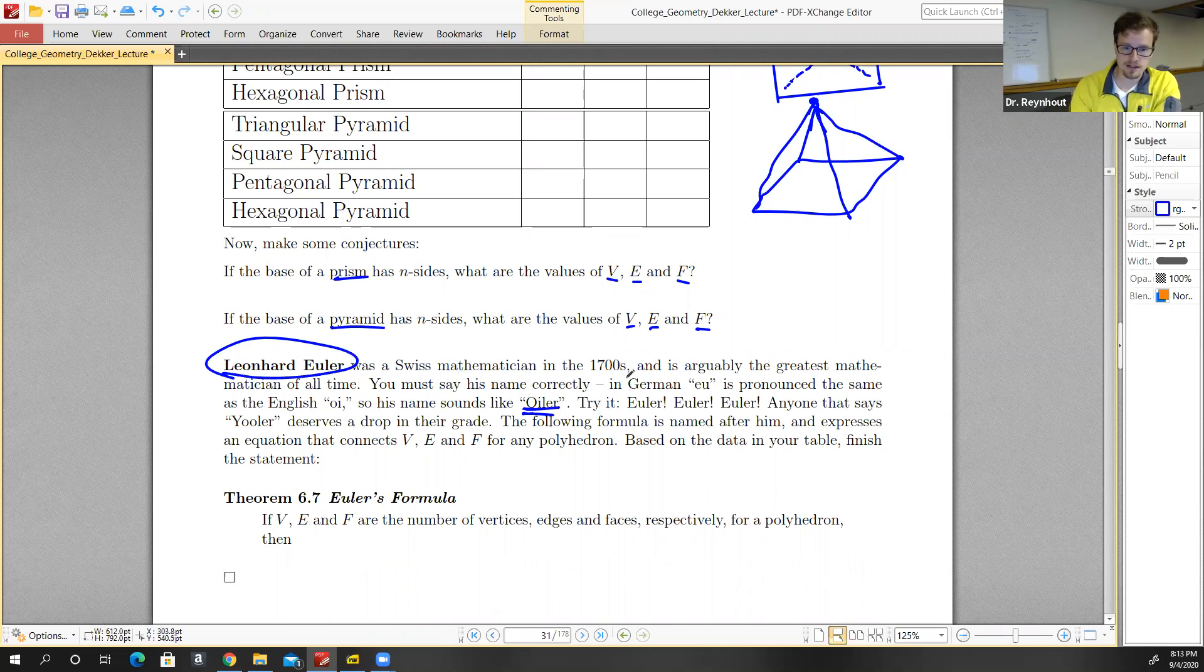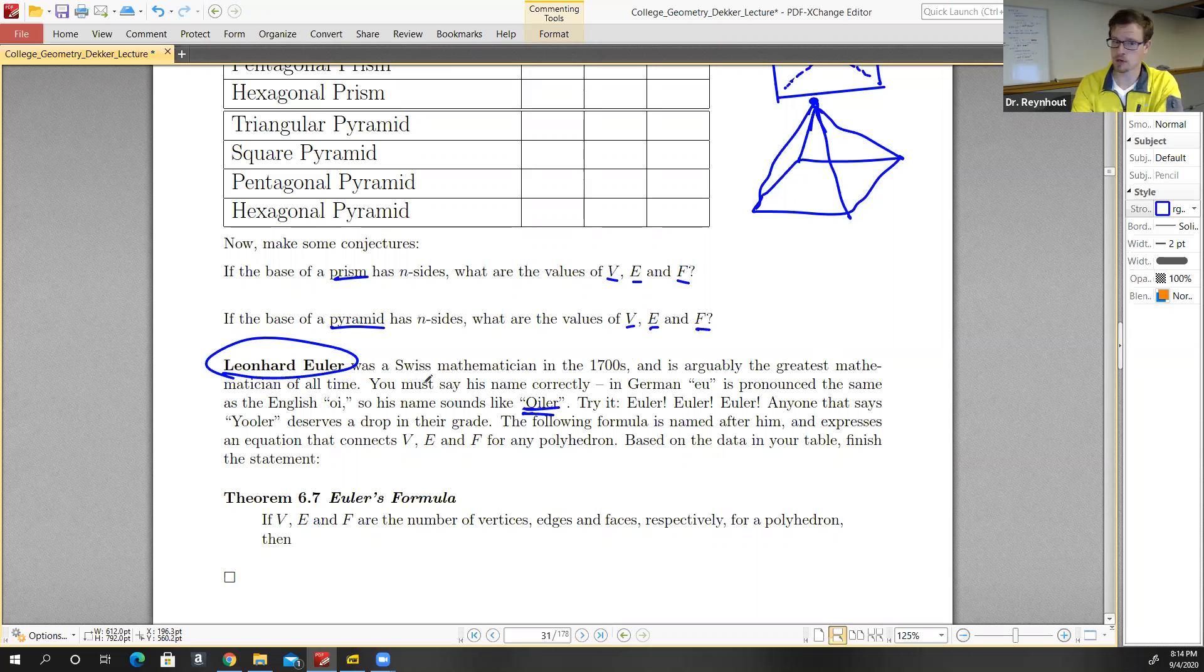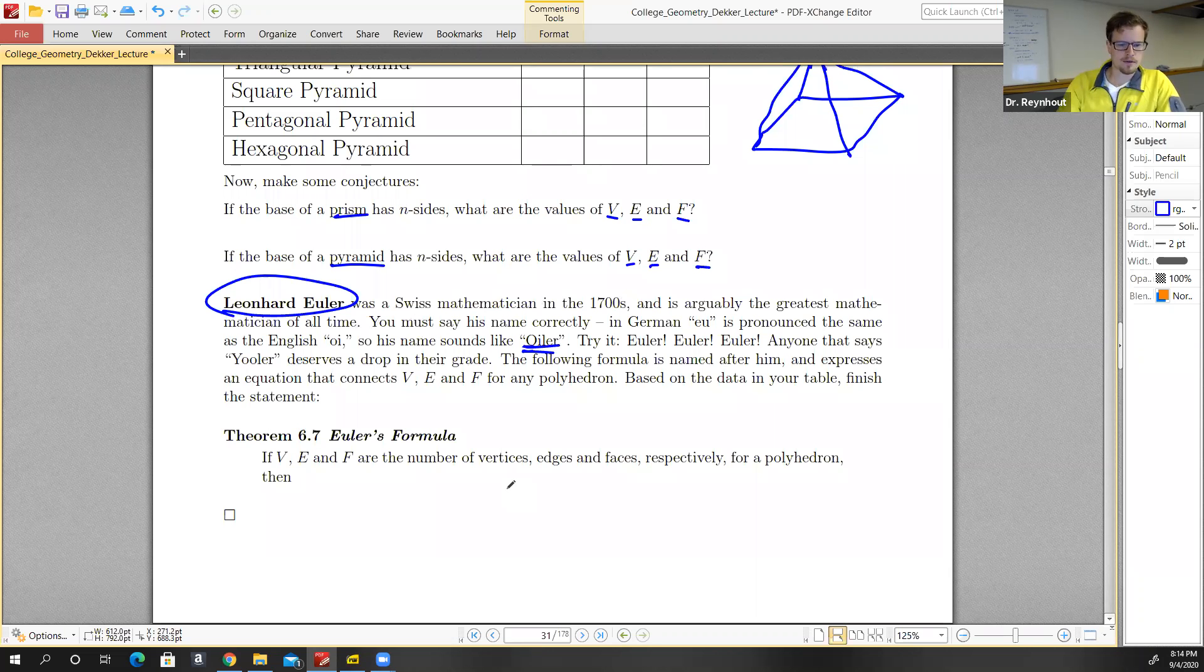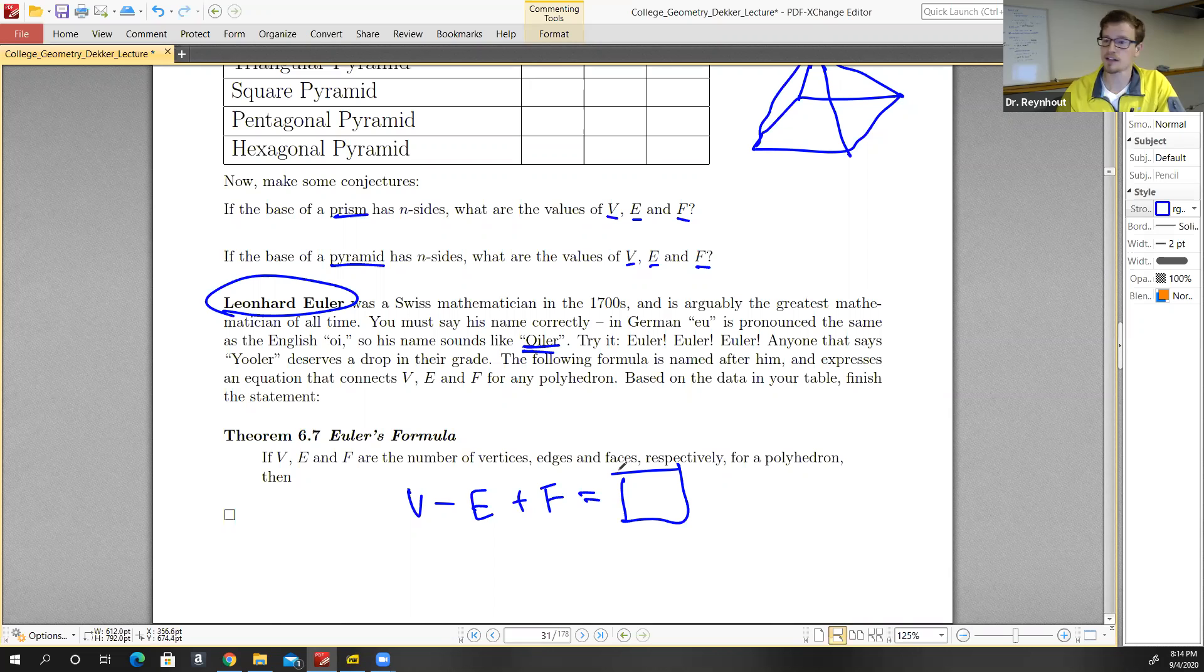You should be able to find, I'll start this out for us. So Euler's formula: if V, E, and F are the number of vertices, edges, and faces for a polyhedron, then V minus E plus F is equal to what? I'll let you fill in that blank.